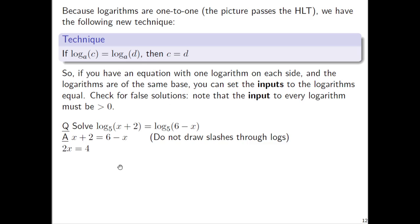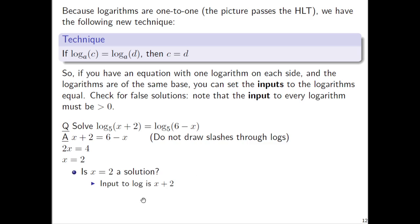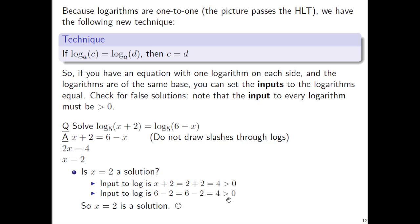So x + 2 = 6 − x. We get 2x = 4, divide both sides by 2, and x = 2. We're not quite done — we have to check for false solutions. The input to the left log is x + 2; plug in 2: that's 4, which is bigger than 0. The input to the right log is 6 − x; plug in 2: that's also 4, bigger than 0. So x = 2 is indeed a solution.